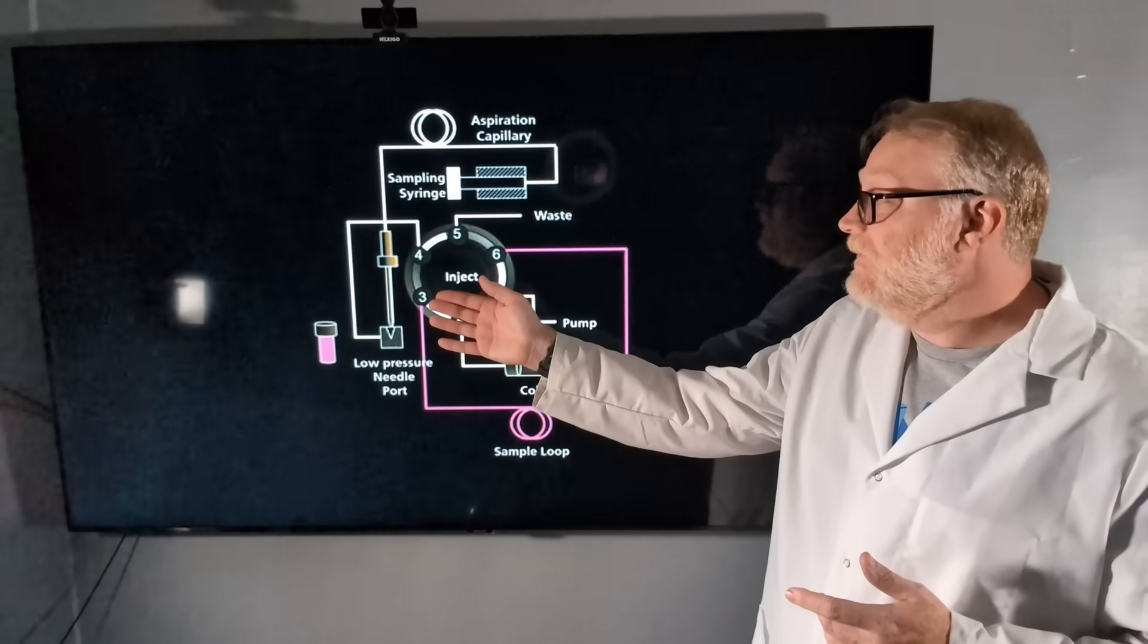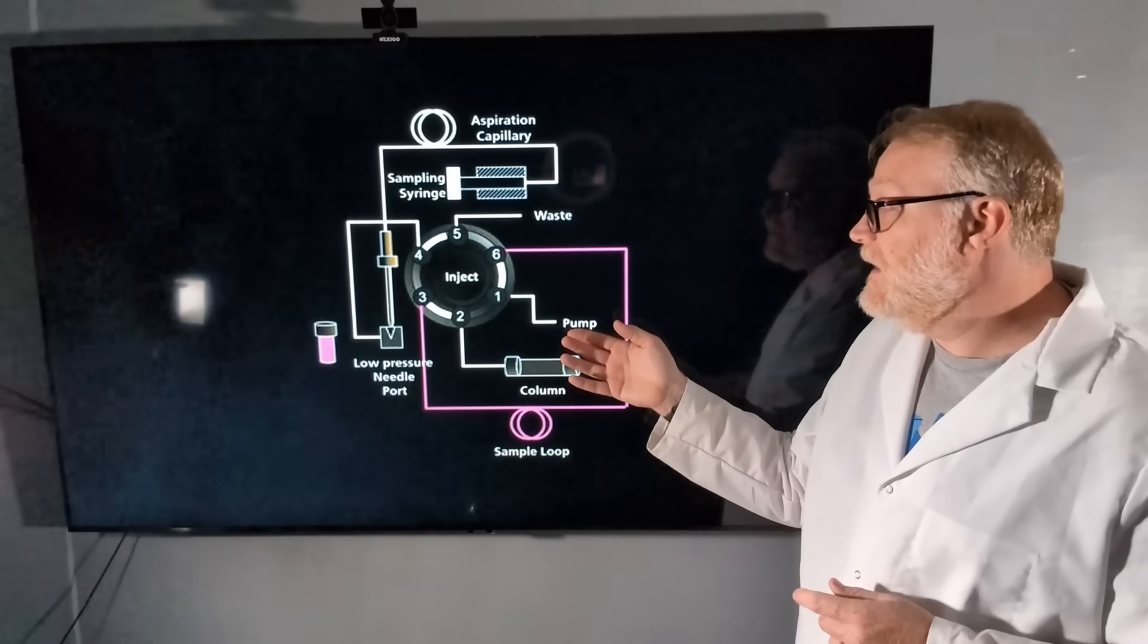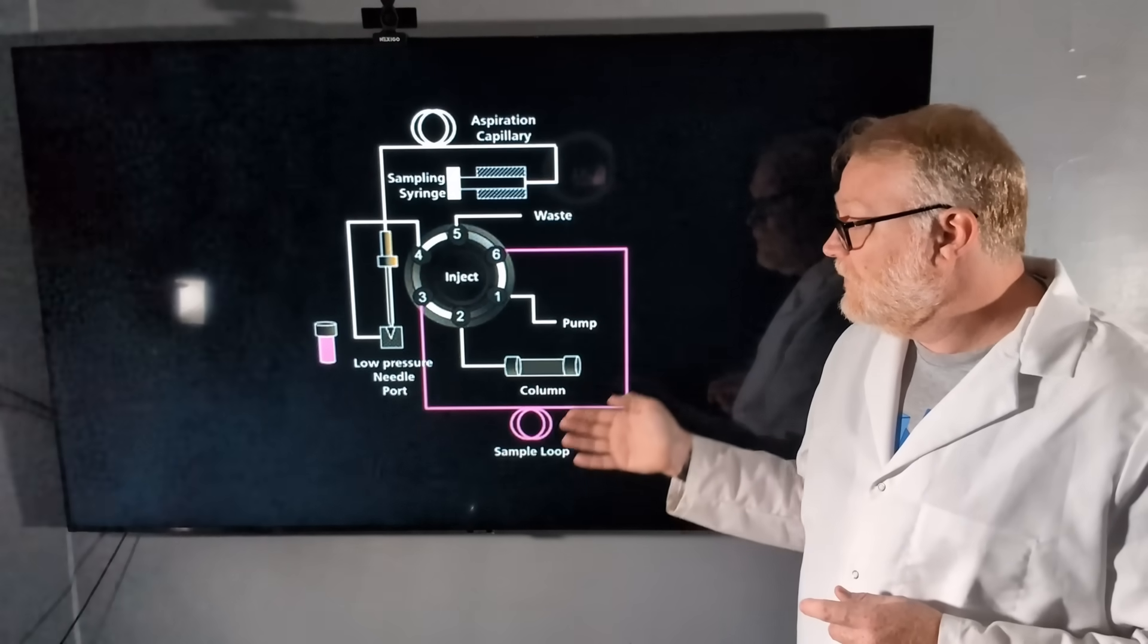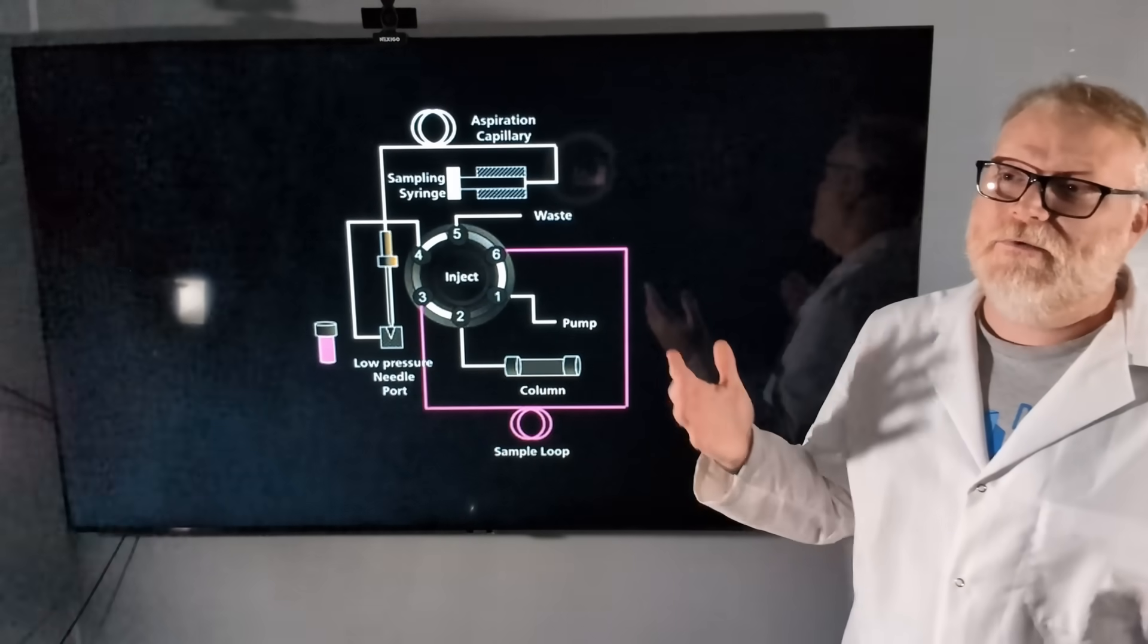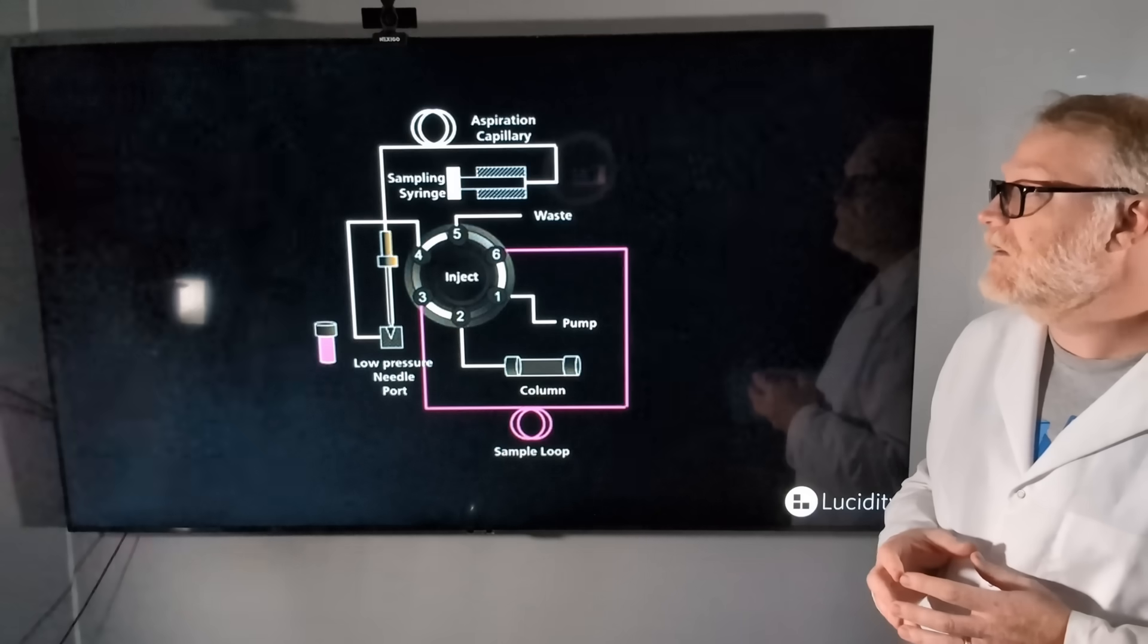Once that's completed, the valve is going to go into the inject position, and then the sample loop is now connected directly to our pump, through the loop, into our column, which will get our peaks at our detector connected on the other end of our column.